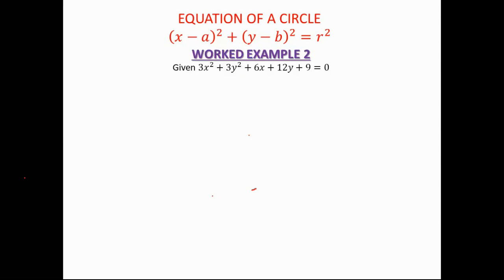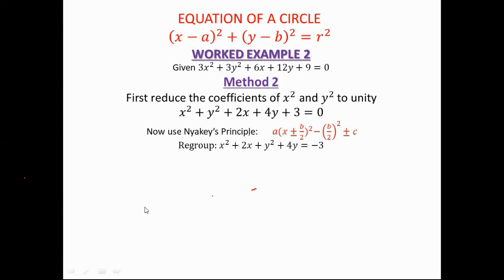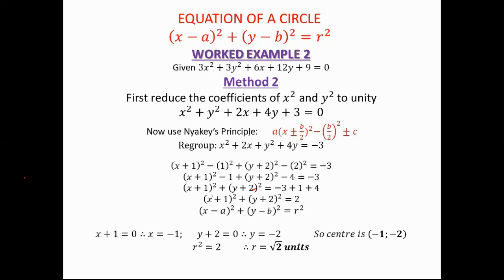Now use the second method — complete the square for this equation and determine the center and radius to verify your previous answer. I got r equals 2 and center equals negative 1 to negative 2. Let's see — you can jump over a number of these steps; I only make them lengthy to explain. You've got the answer and it matches.